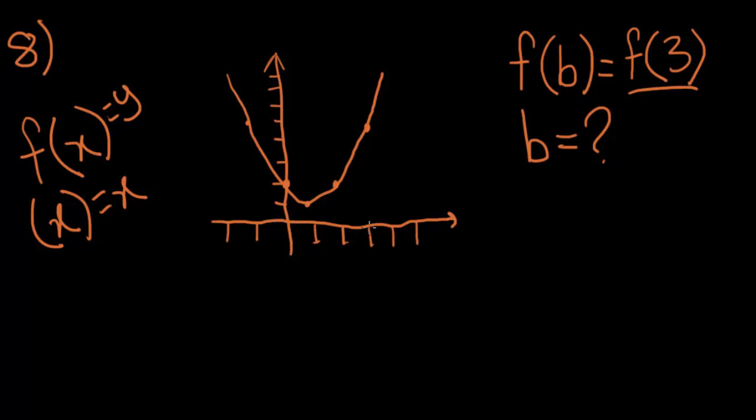Here's 1, 2, 3. So the y value here is 1, 2, 3, 4, 5. So f of 3 is equal to 5. Then you would say, well, then b is also equal to 3 because f of b also has to be equal to 5. Well, yes and no.